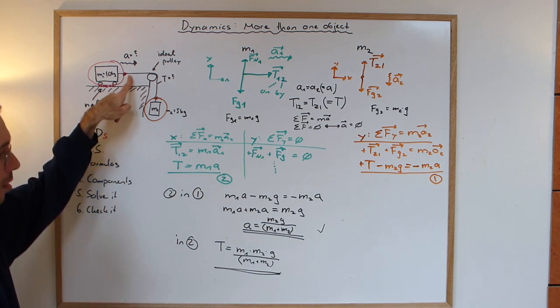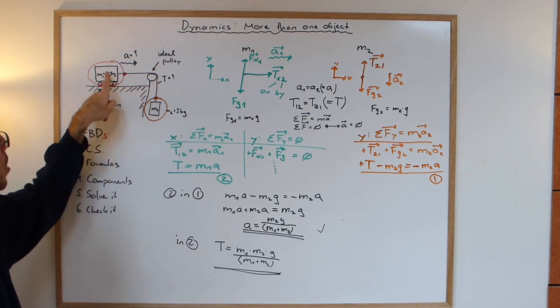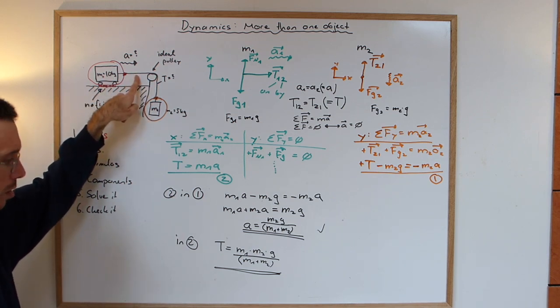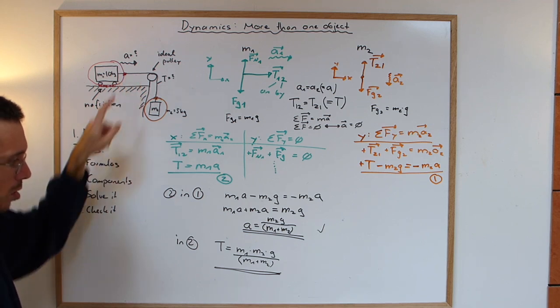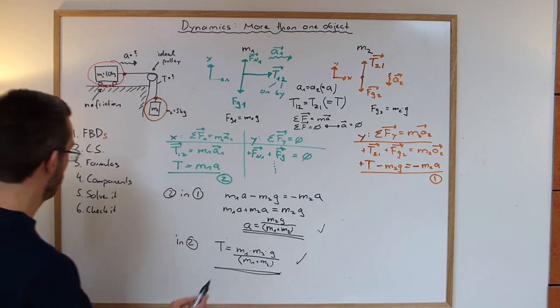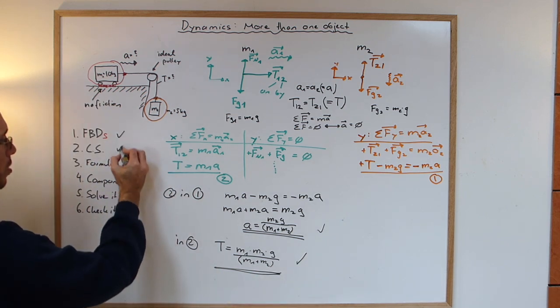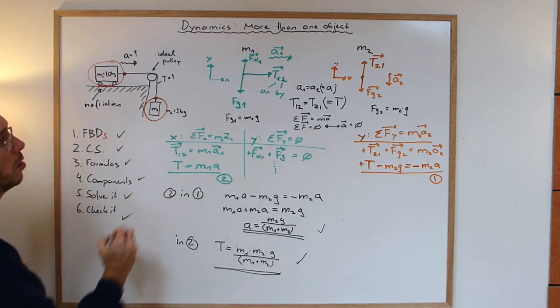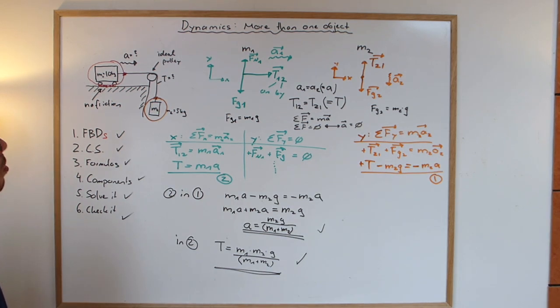So I would say it must be correct. And then the tension is simply the acceleration times mass 1. So it looks like in the end, once I have the acceleration, I simply have to multiply it by that mass. And then I have the tension here. And it looks to me like that's sensible as well. So I would say I checked it and I went through all the steps. And I think the problem is solved. Now all I have to do is plug in the numbers and I have the answers.